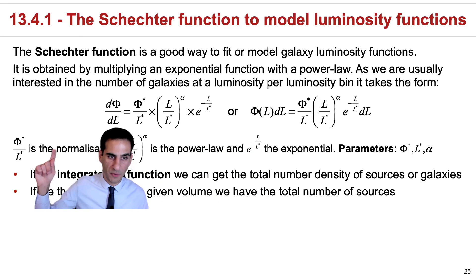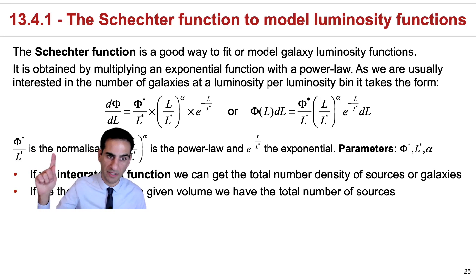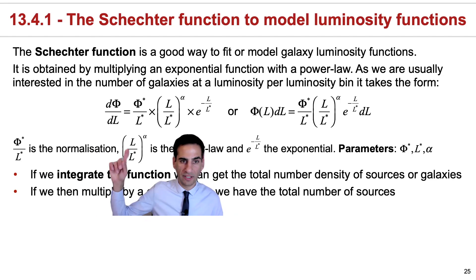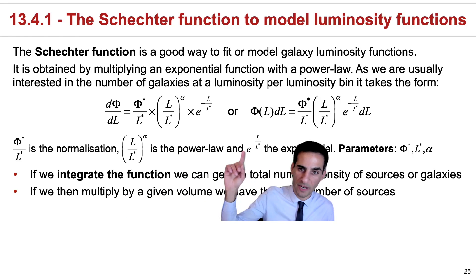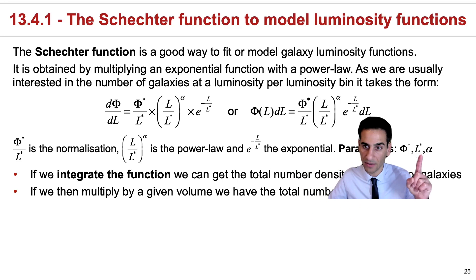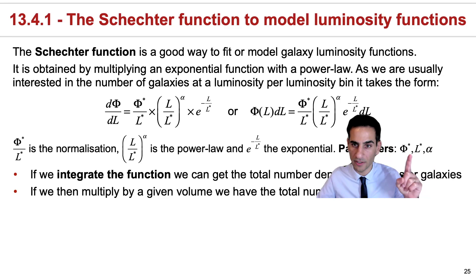Apart from being a relatively simple multiplication of a power law and an exponential function, the Schechter function contains essentially three different parameters. One, which is this ratio of phi star and L star, is basically something that will provide the normalization. While this component L over L star to the power of alpha is the power law component, and e to the power of minus L over L star is the exponential component. Therefore, the three different parameters are phi star, L star, and alpha. This is the parameter of the power law, and the other two parameters essentially set some sort of normalization in both the x and the y axis.